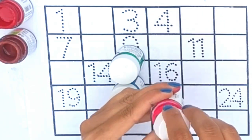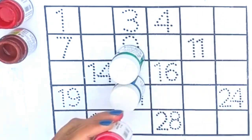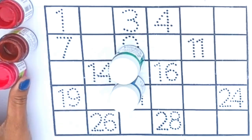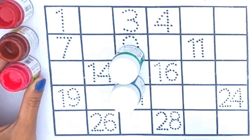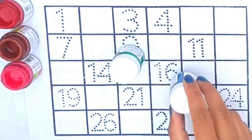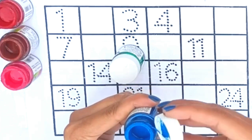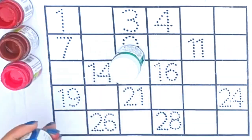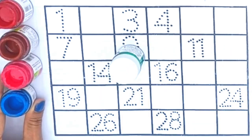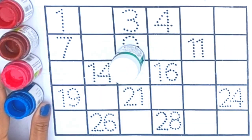Yeh hai Pink Colors. Yeh hai kates Pink Colors. Now this is Blue Colors. Yeh hai pyaare bacchho, Blue Colors.